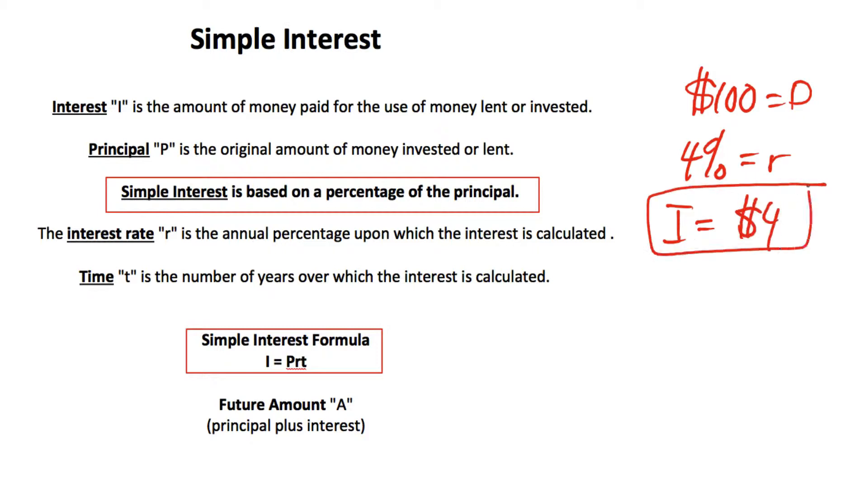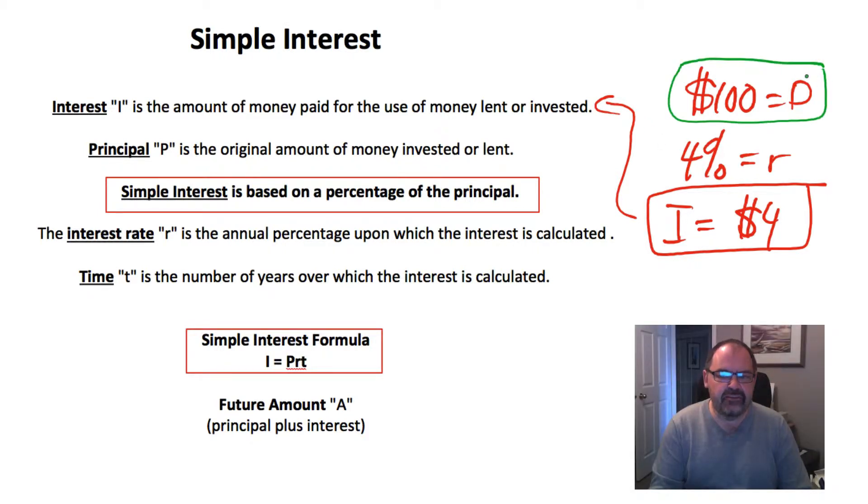So our interest being four dollars. Let's go back to what this means. This means that if you were to deposit a hundred dollars in the bank at 4% interest per year, you would get an additional four dollars extra back at the end of that year, four dollars in interest. In other words, you'd have a hundred and four dollars in the bank.